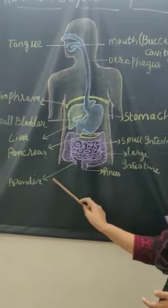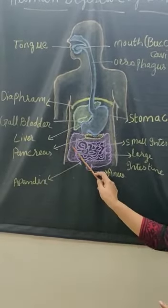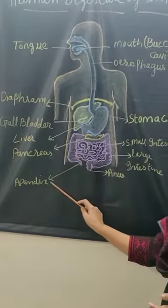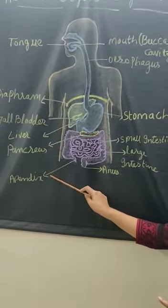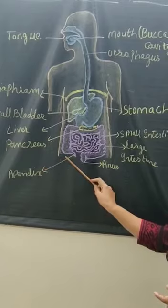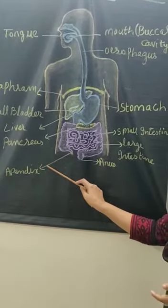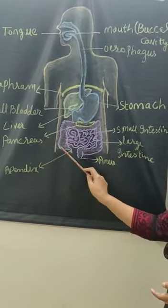Appendix is a small part which is found in the large intestine. It is a vestigial organ. It is useful only for cattle, for whom cellulose can be digested with this.